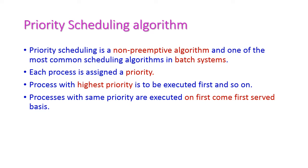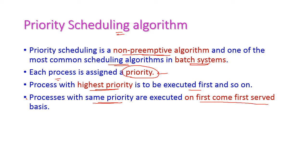Next is priority scheduling algorithm. Priority scheduling is a non-preemptive algorithm and one of the most common scheduling algorithms in batch processing. For each process, a priority is assigned. The process with the highest priority is executed first, the second highest next, and so on. The process with highest priority is executed on a first come first served basis. For example: P1 has priority 5, P2 has priority 4, P3 has priority 4, P4 has priority 2, P5 has priority 1.